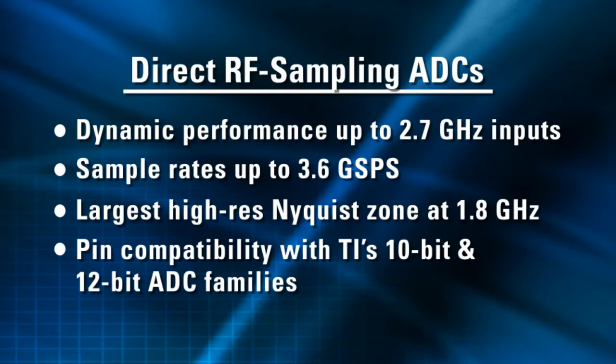The recently released RF sampling gigasample ADCs build on the huge Nyquist zone and excellent dynamic performance of TI's existing gigasample per second devices with improved performance and additional capabilities. Some of the beneficial features include excellent dynamic performance up to 2.7 GHz inputs and beyond, sample rates up to 3.6 GHz sample per second, the industry's largest high-resolution Nyquist zone at 1.8 GHz, and pin compatibility with TI's 10 and 12-bit ADC families, allowing designers to easily explore a wide range of speed and resolution combinations.